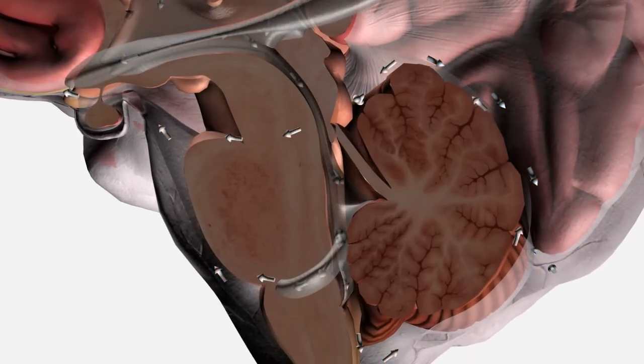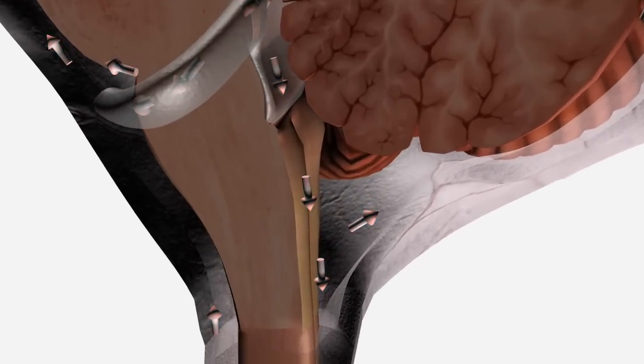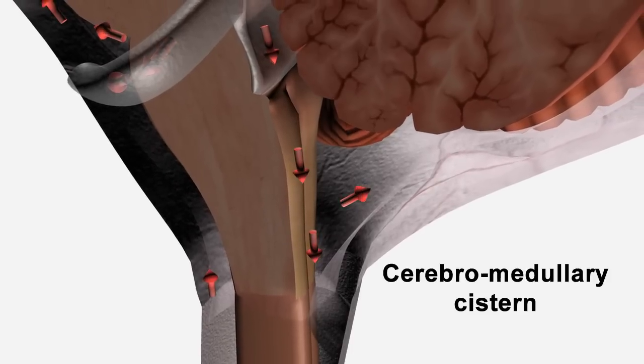CSF exiting the lateral apertures flows to the pontine cistern on the ventral surface of the brainstem, while flow from the medial apertures enters the cerebellumedullary cistern.